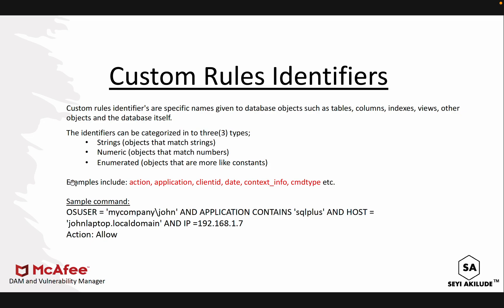Just to give an example — looking at the types of objects, these are actions and objects, applications and objects. These are examples of objects. By the time we go into the hands-on video, we'll dive deeper into how you can actually create them. If you look at this OS user, it accepts strings — so the OS user object would be something like 'my company' or 'John', relating to a domain name and the username itself.